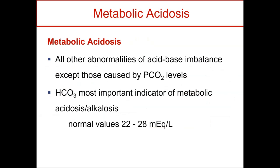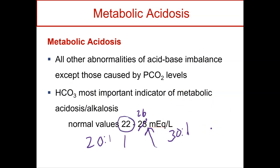When looking at metabolic, it's anything other than CO2 and anything other than the lungs. Our main indicator for metabolic is bicarb — we're looking at our bicarb, and the normal range is around 22 to 26. Remember this was our 20 to 1 ratio. If my bicarb goes up, maybe now I have a 30 to 1 ratio — you can understand how that would make me more alkaline. Or if my bicarb falls and my ratio becomes 10 to 1, I don't have enough bicarb, which puts me in a more acidic state.